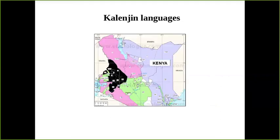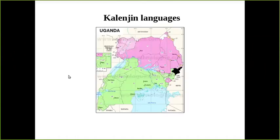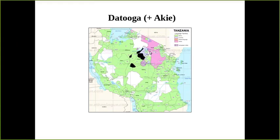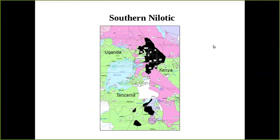In terms of the geographical distribution of these languages, here we see a language map of Kenya, and the Kalangian languages of Kenya are indicated in black on the western border with Uganda. In the Ugandan map, we see just a small area where Kalangian languages are spoken, again on the border with Kenya. In the language map of Tanzania, we see some areas where Datoga is spoken, though Datoga is actually spoken in many more areas than indicated. The Southern Nilotic language Akiya is also spoken in Tanzania, with speakers interspersed with Maasai speakers in the Maasai steppe.